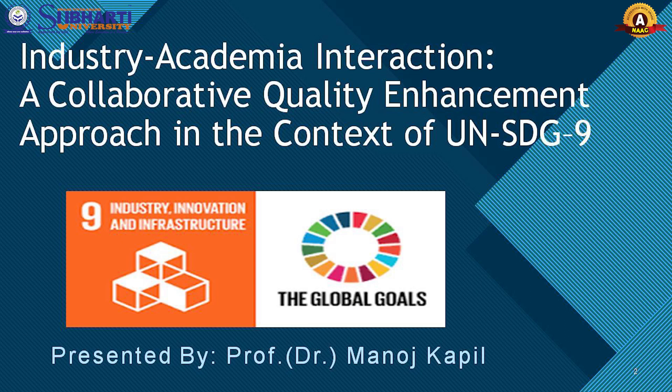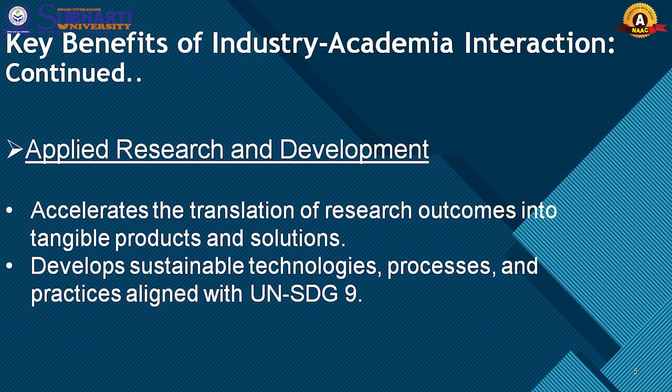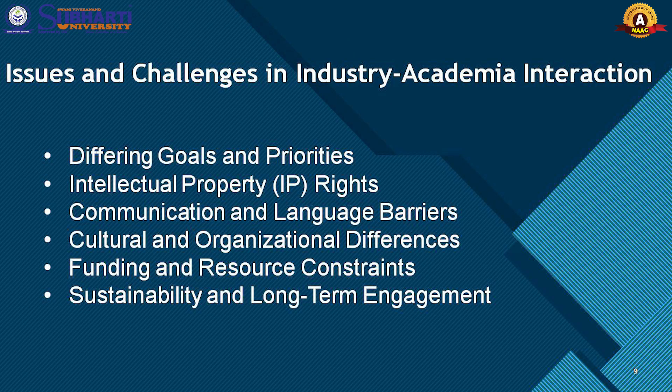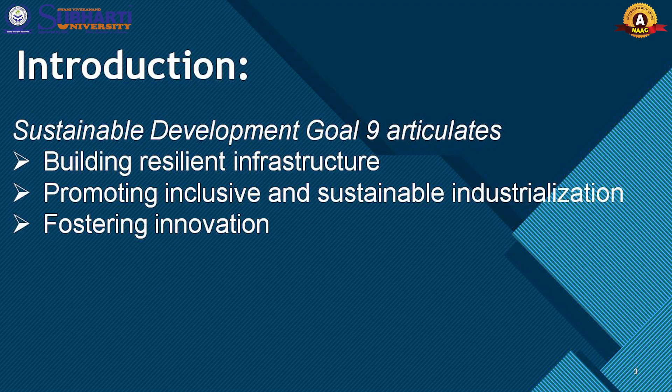Welcome to today's lecture on Industry-Academia Interaction: A Collaborative Quality Enhancement Approach in the Context of UN SDG 9. In this session we will explore the importance of fostering collaboration between industry and academia, particularly in the context of UN Sustainable Development Goal 9. This presentation is divided into four parts: introduction, key benefits of industry-academia interaction, issues and challenges, and strategies to foster collaboration. UN Sustainable Development Goal 9 focuses on building resilient infrastructure, promoting inclusive and sustainable industrialization and fostering innovation. The interaction between industry and academia plays a pivotal role in achieving this goal.